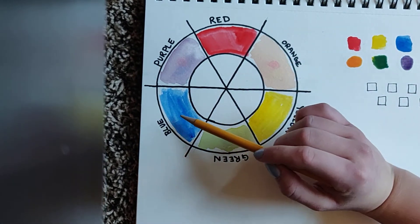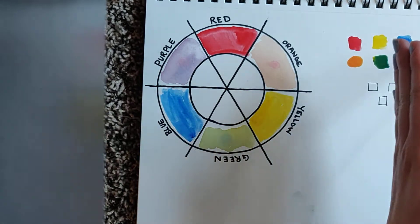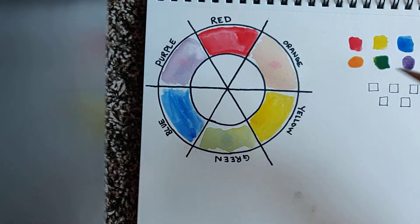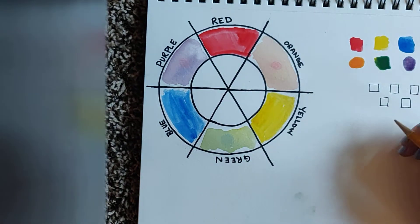Now red, yellow, and blue are called the primary colors. You can clap that one out. And that's because those are the most important colors that we need to make the rest of the colors.